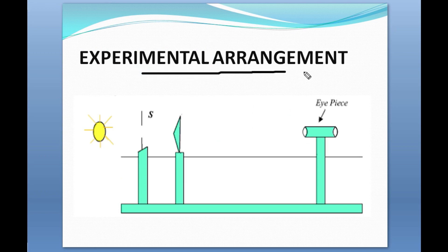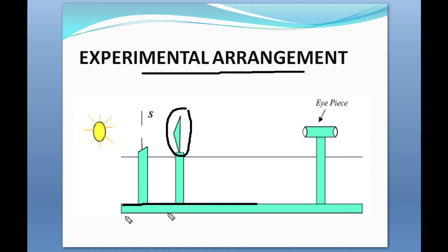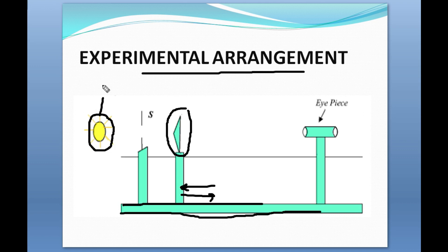Now for the experimental arrangement to determine the wavelength of monochromatic light, we first need to mount the Fresnel's biprism on the optical bench. The two rods allow the optical components to be moved forward and backward. This monochromatic source can be a sodium vapor lamp, and here there is a slit which acts as a very narrow source. This narrow source falls directly on the Fresnel's biprism.